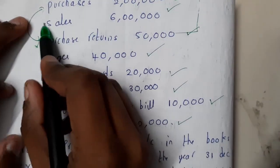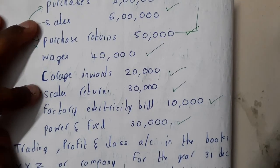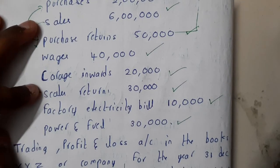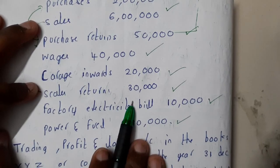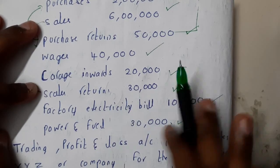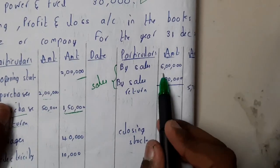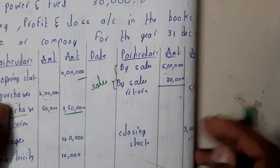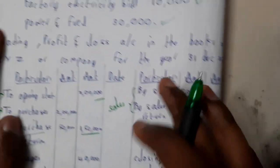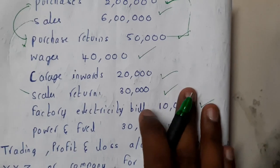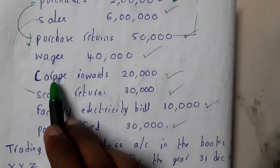Sales are combined with sales returns on the right side. So six lakhs minus thirty thousand equals five lakhs seventy thousand. That's what we write: sales six lakhs, less sales returns thirty thousand, net five lakhs seventy thousand.